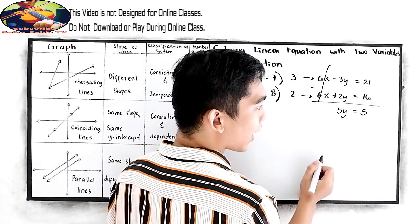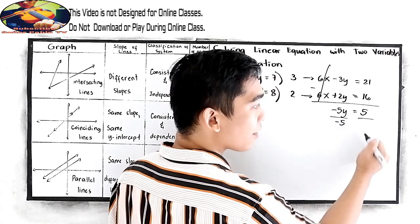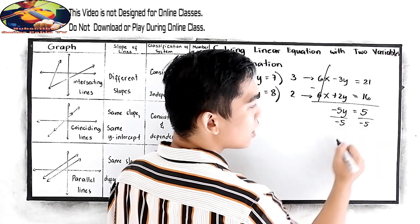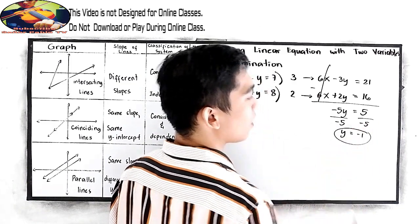We need to get the value for y, so we need to divide by negative 5. So y is equal to negative 1.